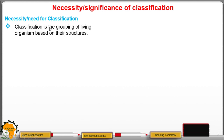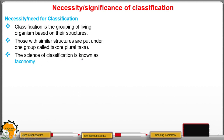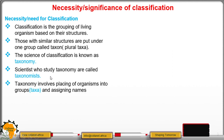We have defined classification as the grouping of living organisms based on their structures. Organisms with similar or the same structures are placed in one group called a taxon, and several groups are called taxa. The science or study of classification is known as taxonomy. Those scientists who study taxonomy are referred to as taxonomists. Taxonomy involves placing organisms into groups, also known as taxa, and giving them names.